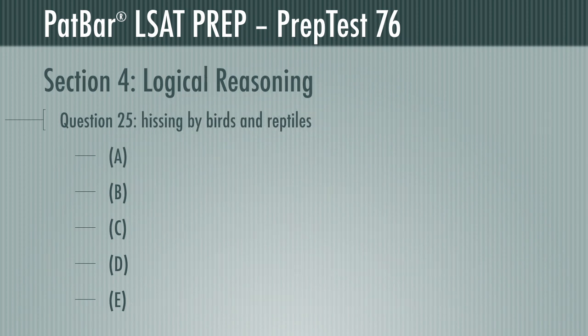Question 25 includes an essay on the hissing sound used by many species of birds and reptiles to ward off predators. It postulates that this similar action suggests a common ancestor, but notes that such an ancestor would have lived at a time when predators could not hear that hissing. Which answer would most help to resolve that problem if it were true?